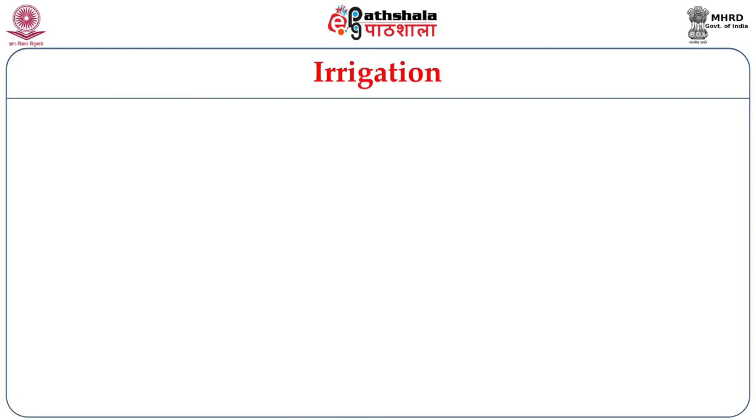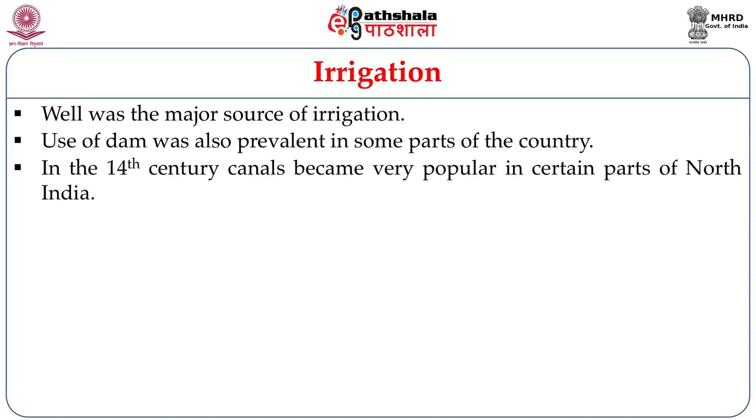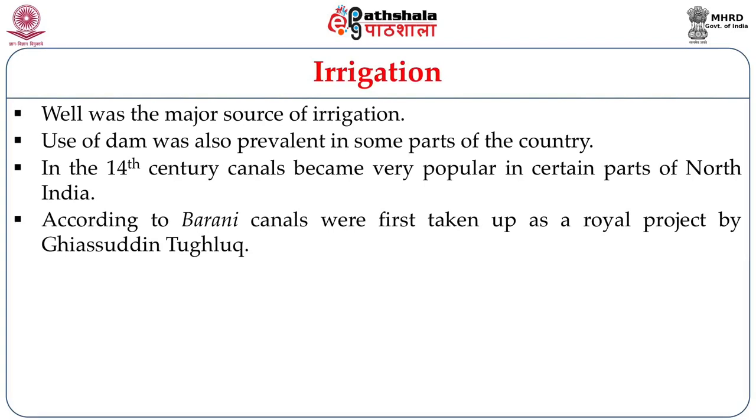A large change occurred in irrigation. Irrigation paved the way for land to produce crops in two seasons — this was the first time irrigated lands could produce products for two seasons. Wells were a major source of irrigation, and the use of dams was also prevalent in some parts. In the 14th century, canals became very popular in certain parts of North India, a tradition that came from Central Asia with the Turks.